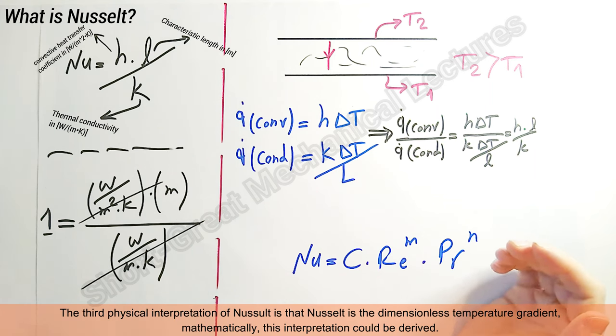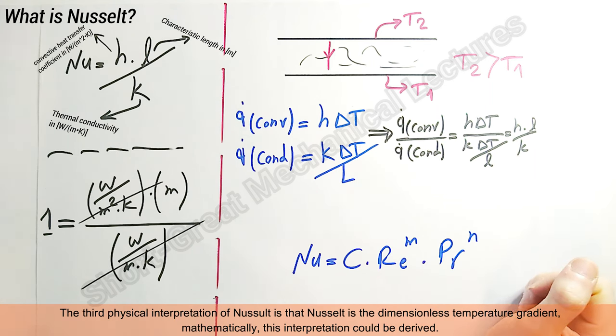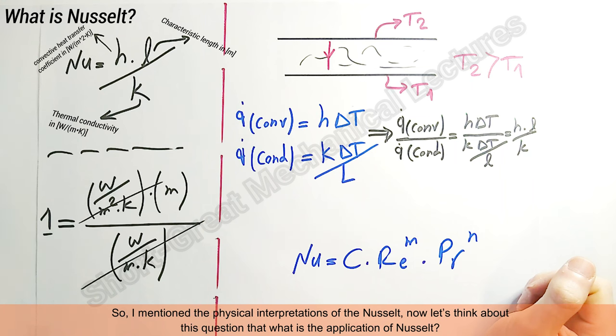The third physical interpretation of Nusselt is that it represents the dimensionless temperature gradient. Mathematically, this interpretation can also be derived.